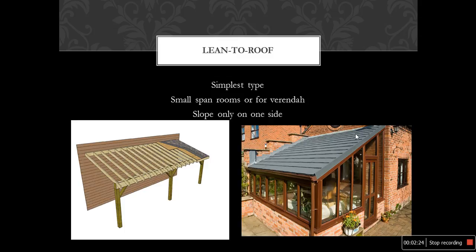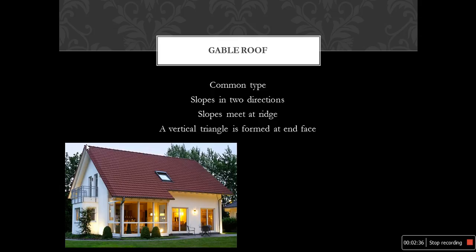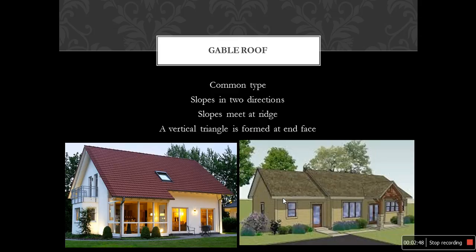Gable roof is the second most common type of pitched roof. It will have slopes in two directions, and the slopes meet at the ridge at the top. A vertical triangle is formed at the end of the surface, which is supported by means of gables. These two figures will give you an idea of how the gable roof will look.